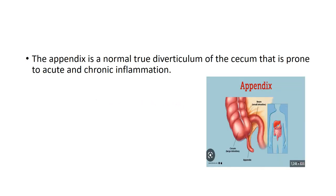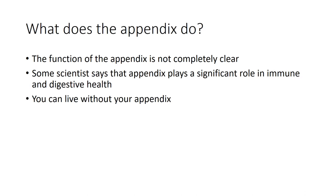What is the appendix? The appendix is a normal true diverticulum of the cecum that is prone to acute and chronic inflammation. As you can see in this diagram, this is the part of the small intestine — the ileum — and this is the part of the large intestine, the ascending colon. At the bottom of the ascending colon you can see a diverticulum — a pouching or bulging that extends from the organ, commonly found in the GI tract. That is called the appendix.